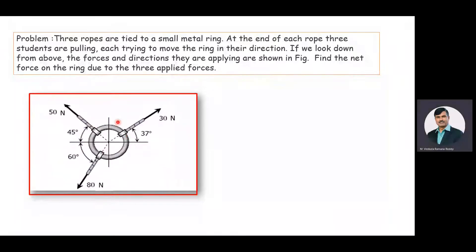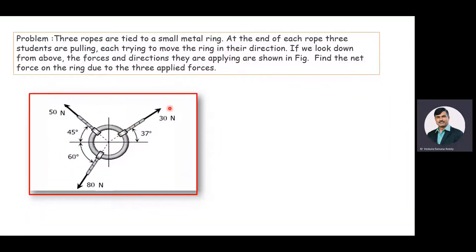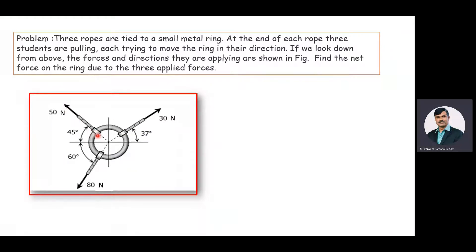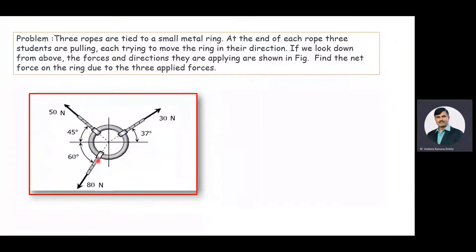This is the metal ring and three students are pulling the metal ring with the help of ropes in their directions. The first student is pulling with a force of 30 Newton, and this rope is making an angle of 37 degrees with the x-axis. The second student is pulling with a force of 50 Newton, and the rope is making an angle of 45 degrees with the x-axis. The third student is pulling with a force of 80 Newton, and this rope is making an angle of 60 degrees with the x-axis. Our objective is to find the net effective force acting on the ring.